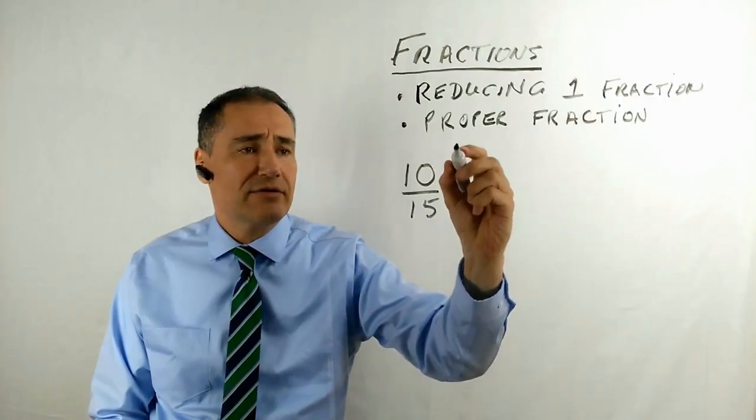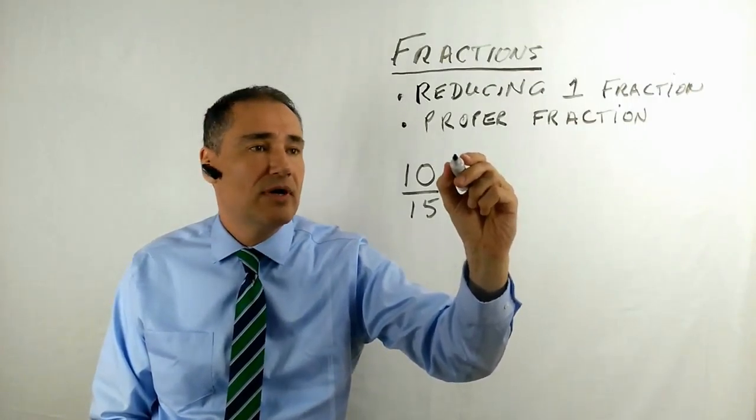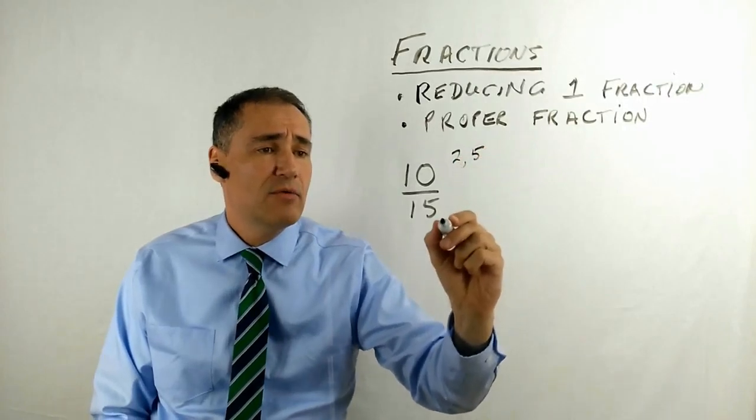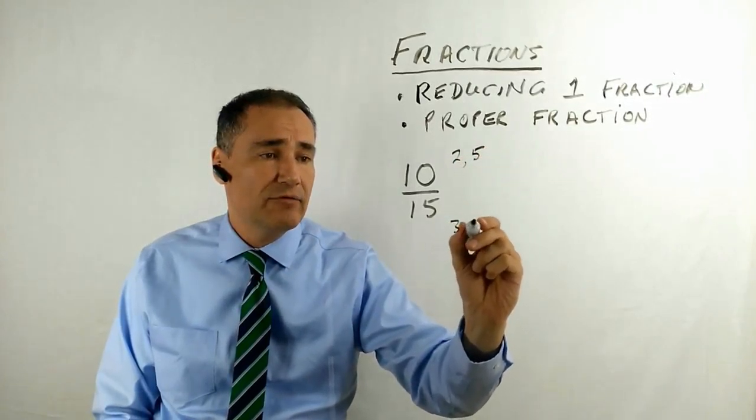So first of all, we factor this. What are the factors of 10? Well, the factors of 10 are 2 and 5. What are the factors of 15? Well, 3 and 5.